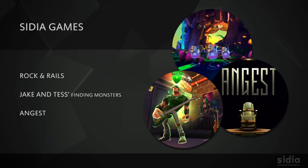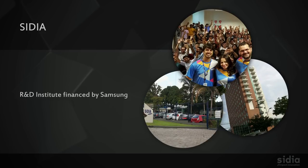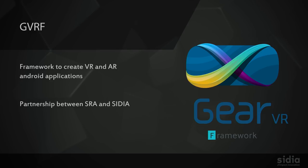We also have a small game studio called Black River Studio. The games we made there include Rock and Rails, Jack and the Find Monsters, and Angus. One of the tools we use there is called Gear VR Framework, which is a framework to create VR and AR applications for Android. This tool was made in partnership between SRA and Cydia.